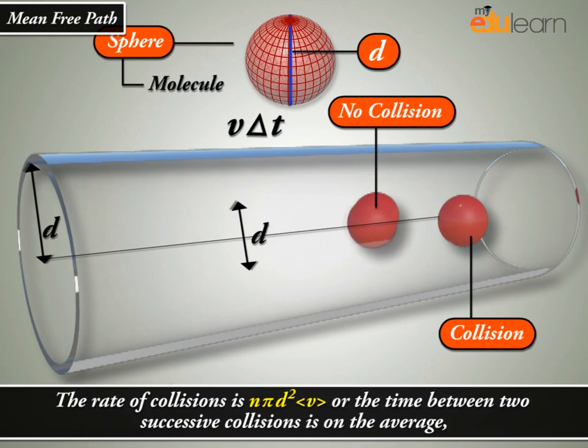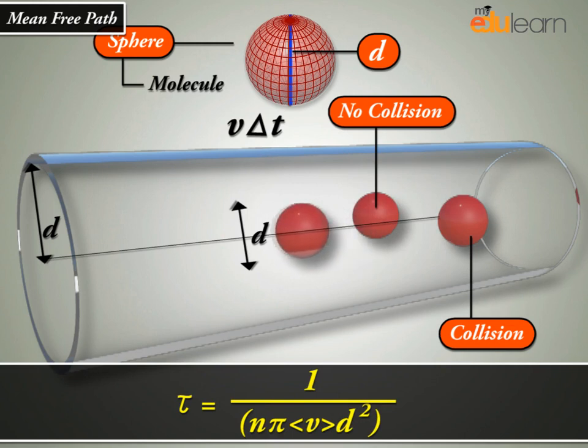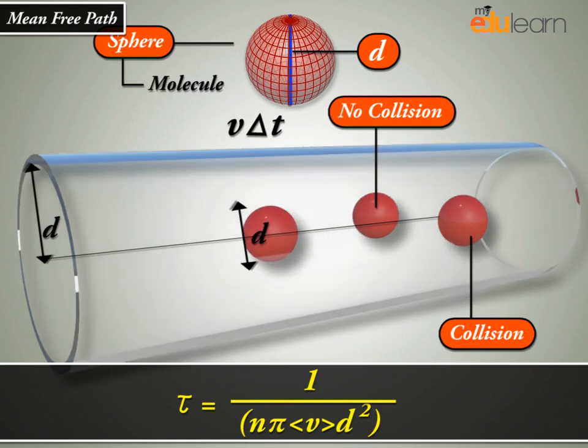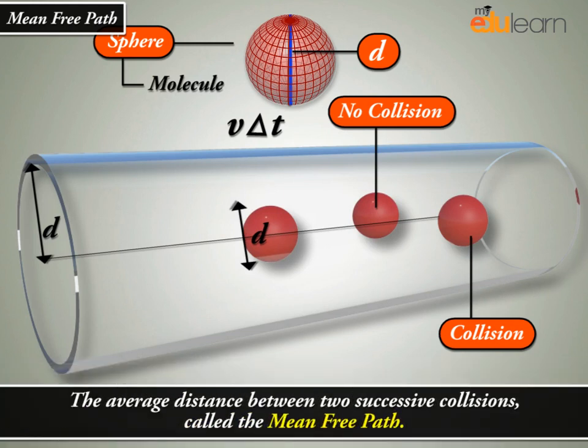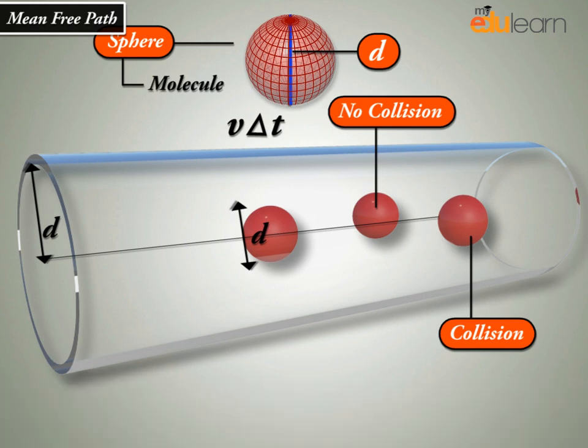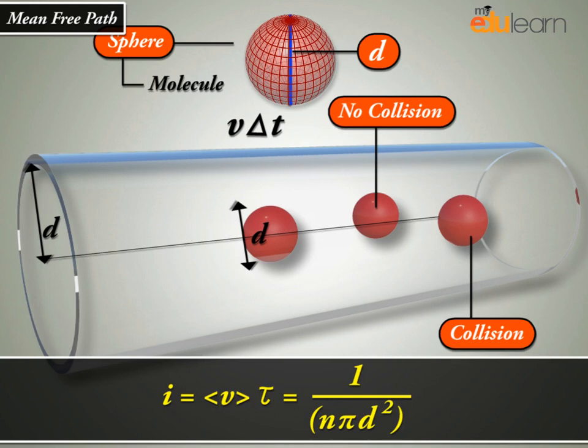Thus, the rate of collisions is N πd² V, or the time between two successive collisions is on average τ = 1/(N πd² V). The average distance between two successive collisions, called the mean free path, is τ = 1/(N πd²).